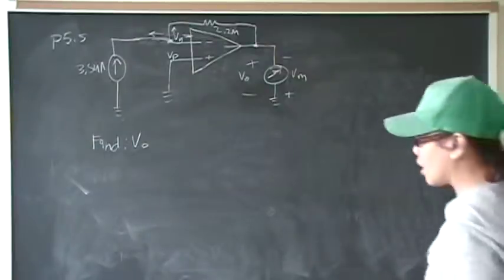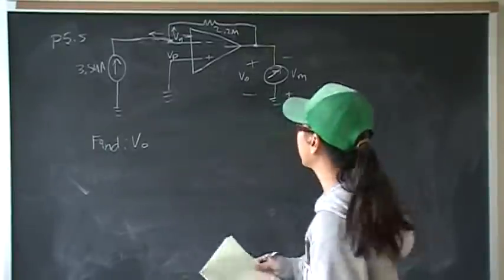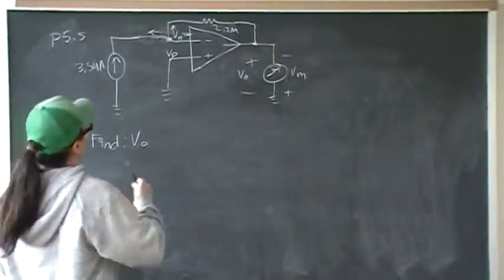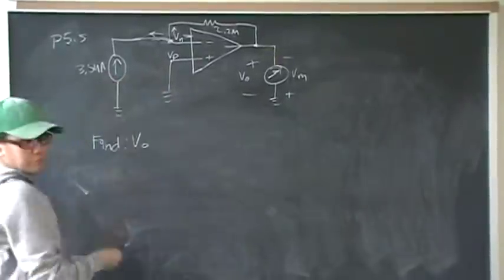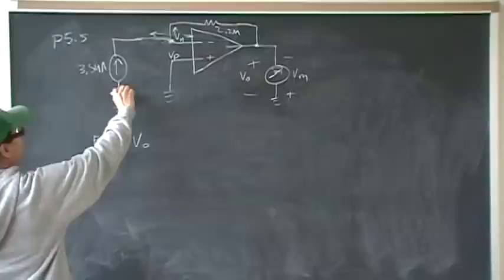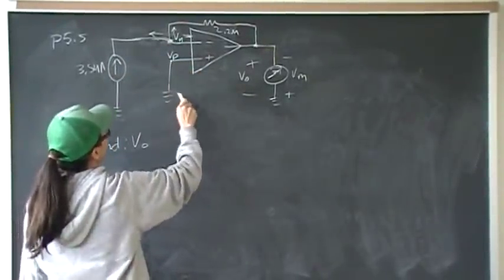This is problem 5 from chapter 5. We have an inverting op-amp that's ideal, with a 3.5 microamp current source going into the negative terminal. The positive terminal is connected to ground.